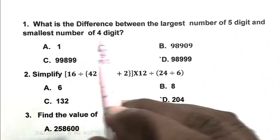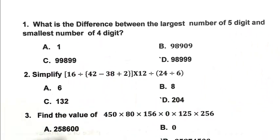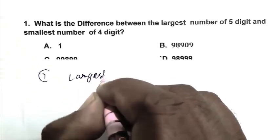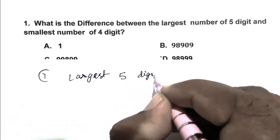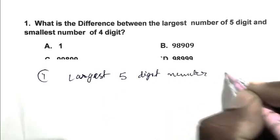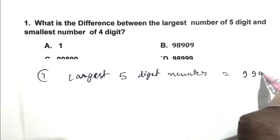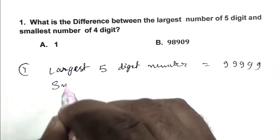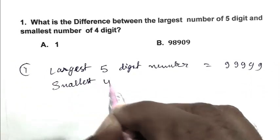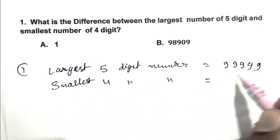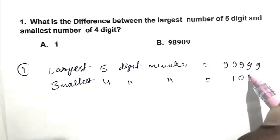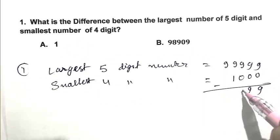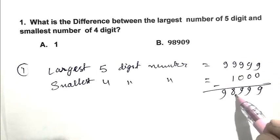Question number one: What is the difference between the largest number of five digit and smallest number of four digit? So friend, largest five digit number is 99999, smallest four digit number is 1000. The difference is 99999 minus 1000, which equals 98999. So D is the right answer.